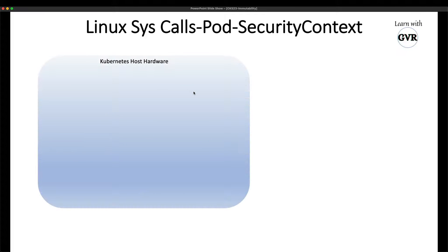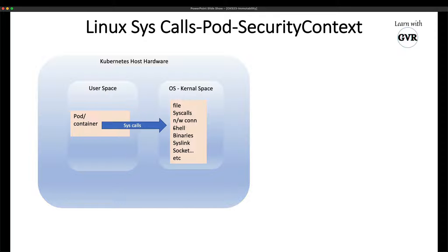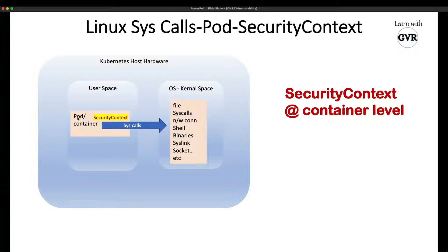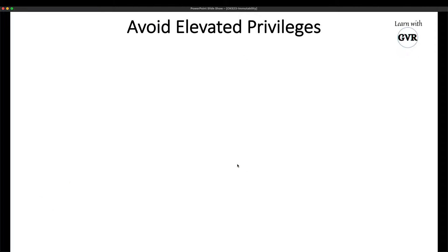Looking at Linux syscalls: on a Kubernetes host or node, we have a kernel space and a user space. A pod runs in the user space and makes system calls. How it makes those calls depends on its security context. If the pod has elevated privileges, it can make various kinds of syscalls. So the key is restricting privileges at the security context level to secure the Kubernetes environment.